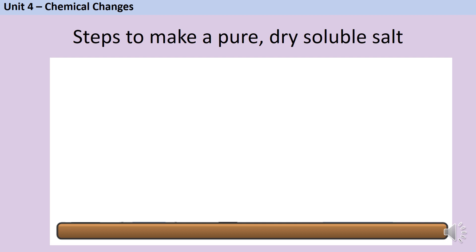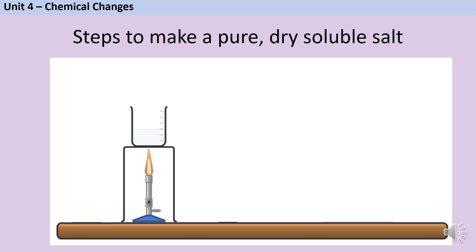Now let's look at the steps you would need to include if you were going to write a method for how to make a pure dry sample of a soluble salt. In most exam questions, they're going to name a specific salt, so you'll get credit at the start for identifying which reactants to use. Let's say I was going to make some copper sulfate. The fact that it's a sulfate tells me I need sulfuric acid, so the first step in my method would be to measure out some sulfuric acid. To speed things up, I'm going to heat up my acid — usually using a Bunsen burner with my acid on a tripod.